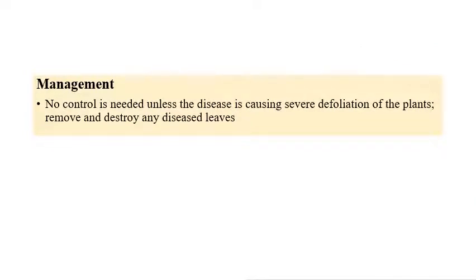Coming to management of Phyllosticta leaf spot, no control is needed unless the disease is causing severe defoliation. If only a few leaves are infected, simply clip off and remove those leaves. If there is a huge area affected, fungicides are recommended. Biocontrol agents, if available, are preferred rather than completely relying on systemic fungicides.